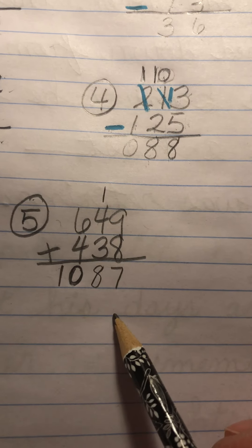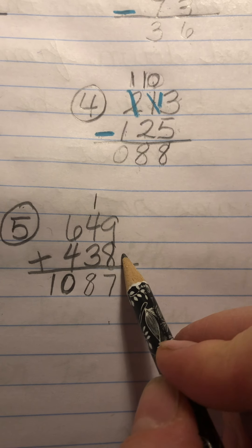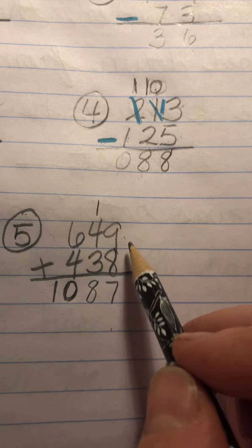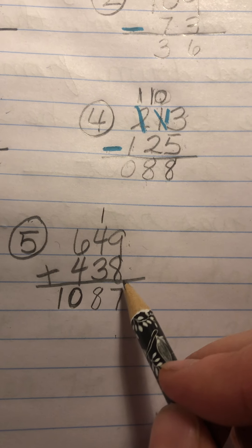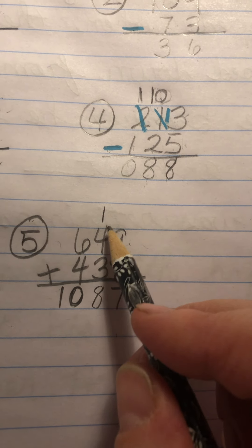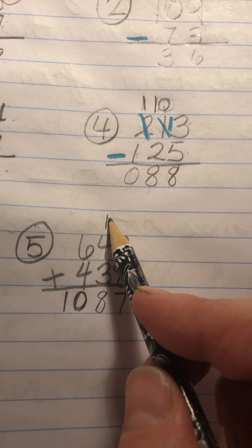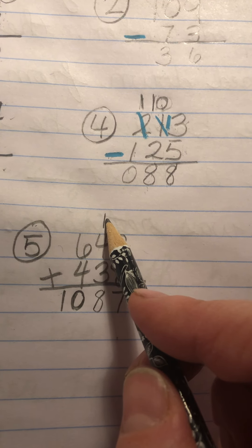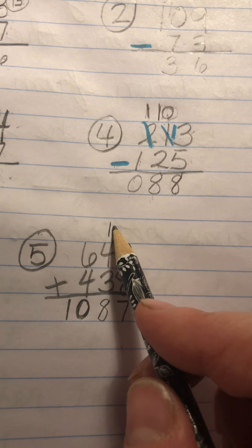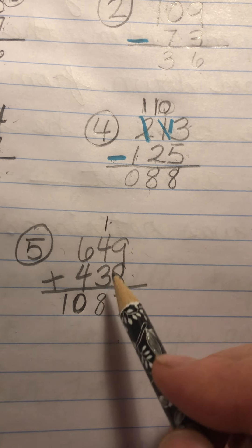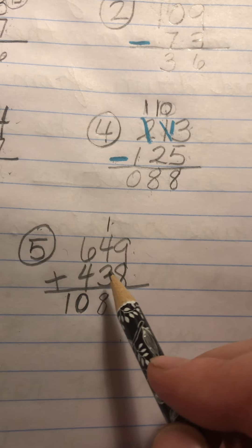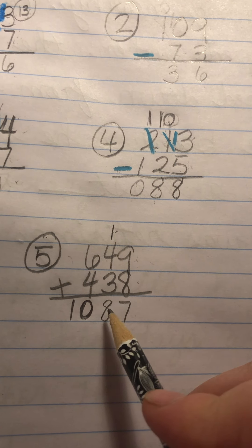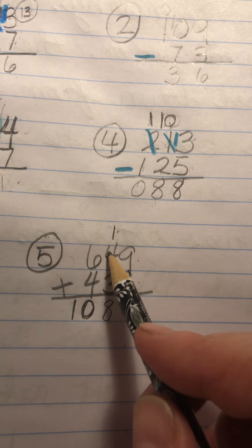And number 5 was addition. So we had 8 plus 9. I know that 8 plus 8 is 16. So I know I just had to add one more to make it 8 plus 9. And that's 17. I have to carry the 1 because the 1 isn't 1. It's 10. And I have to put it in the right column. It goes into the 10s column. And there it's living. Now I'm adding 4 plus 3 plus 1. And I have 8. It's the same as 4 plus 4.